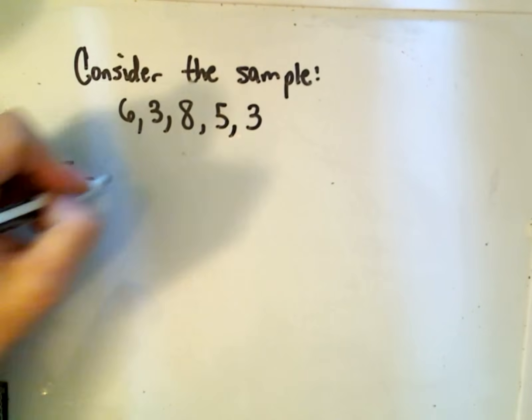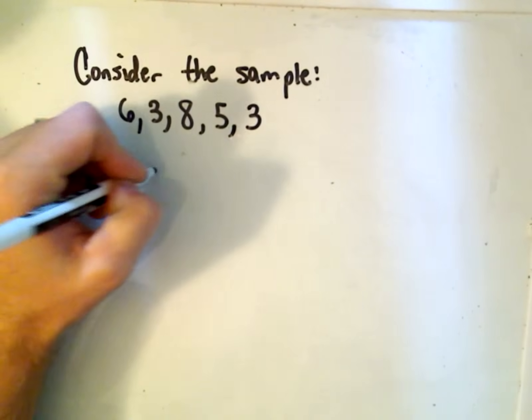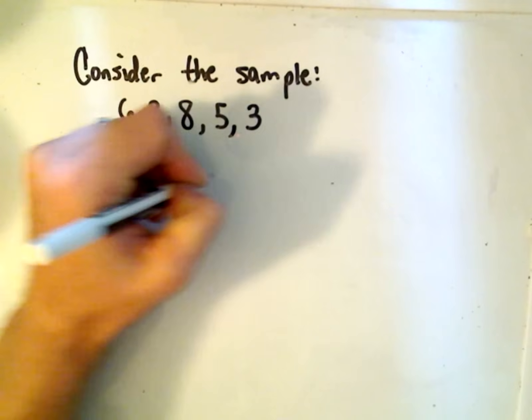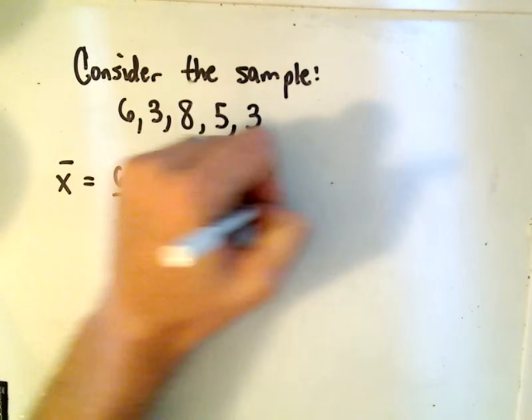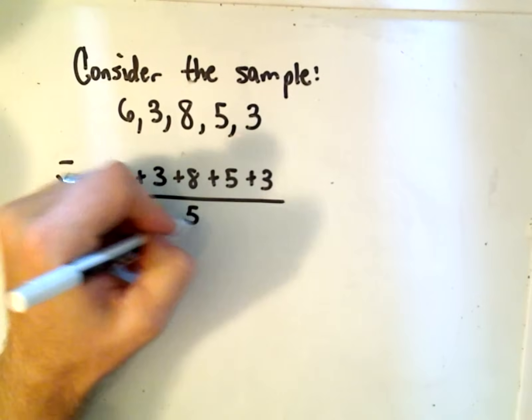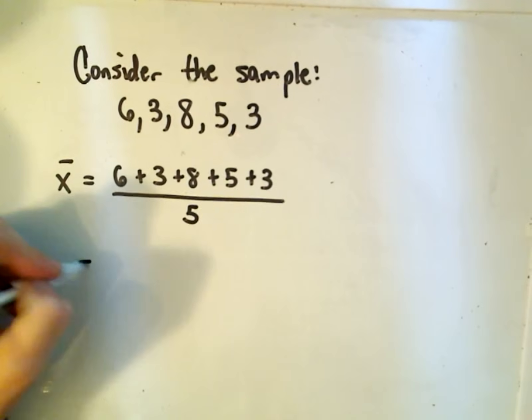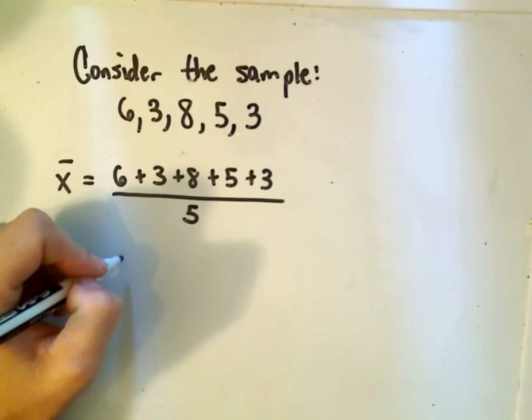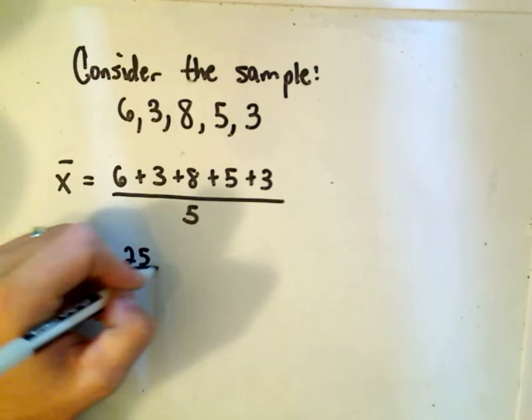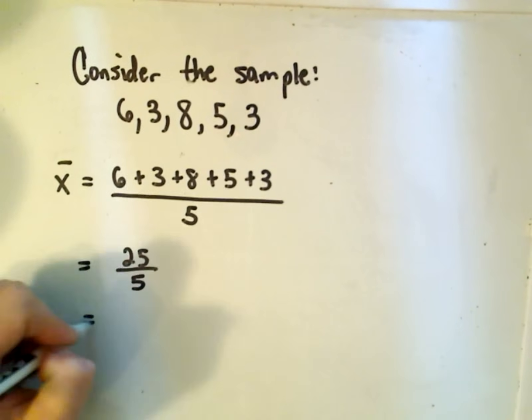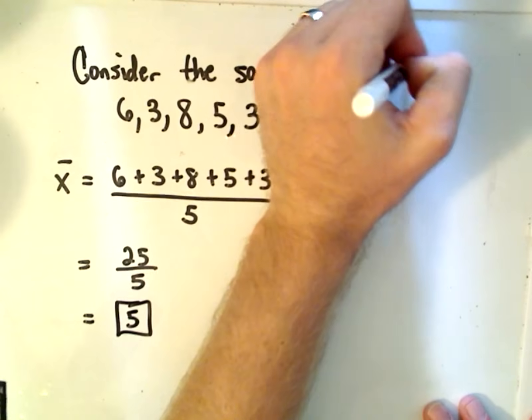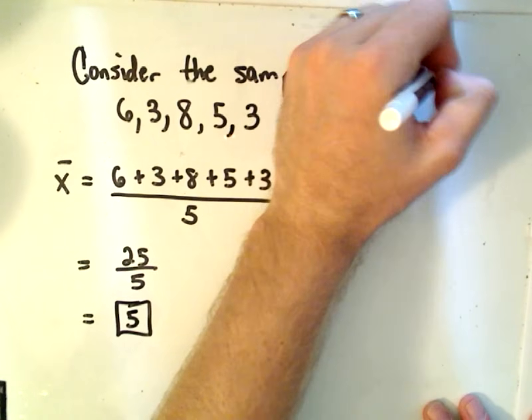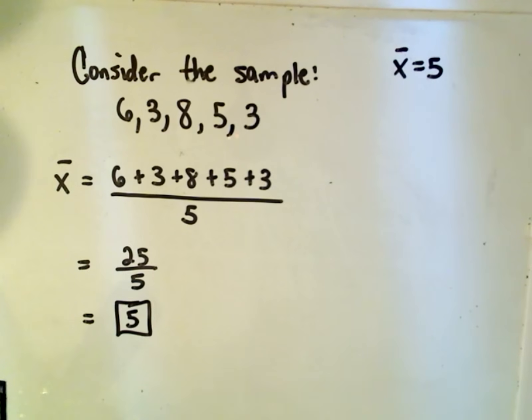To calculate an average, we just add up our data: 6 plus 3 plus 8 plus 5 plus 3 divided by the number, which is 5. I got this average to be 25 over 5. So the average x bar is going to be 5. Maybe I'll stick that over here to the side. So x bar, the average value is going to be 5.